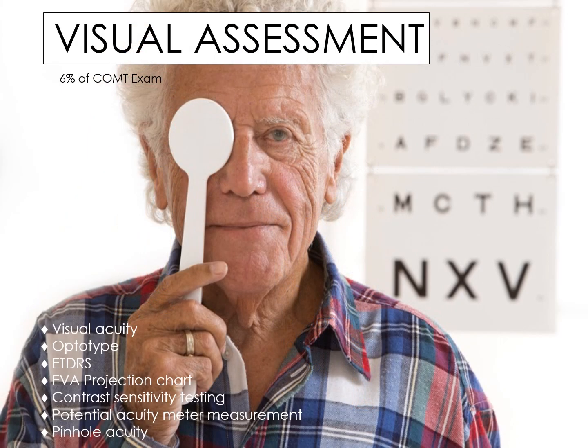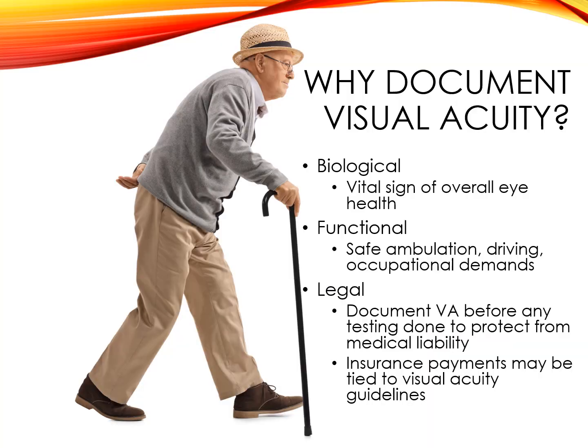Questions regarding visual assessment techniques will comprise approximately 6% of your COMT exam. We check visual acuity for three main reasons. First, for biological reasons: visual acuity is our vital sign and it indicates the overall health and well-being of the eye. Secondly, for functional reasons: to ensure that the patient's visual acuity meets their needs for ambulation, driving, and occupational requirements. Finally, for legal reasons: documenting the visual acuity prior to any intervention can help prevent problems as far as medical liability.